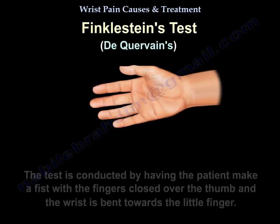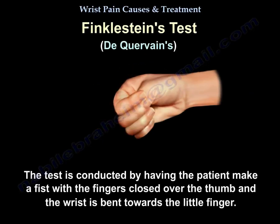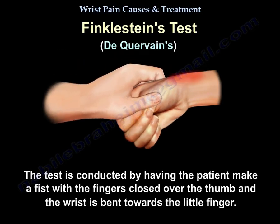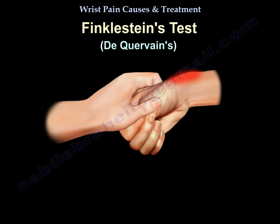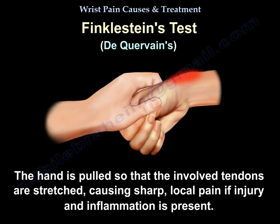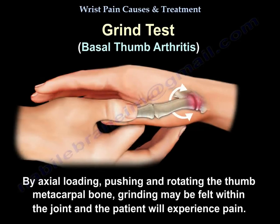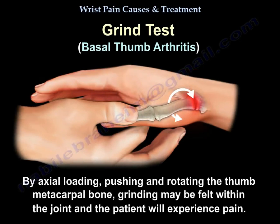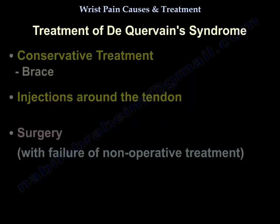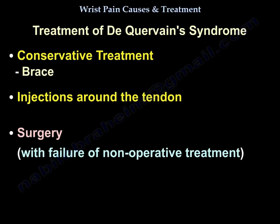The Finkelstein test is conducted by having the patient make a fist with the fingers closed over the thumb, then bending the wrist toward the little finger. The hand is pulled so the involved tendons are stretched, causing sharp local pain if injury and inflammation is present. The grind test for basilar thumb arthritis is performed by axial loading, pushing, and rotating the thumb metacarpal bone — grinding may be felt and the patient will experience pain. Treatment of De Quervain syndrome includes conservative treatment, bracing, injections around the tendon, and surgery when non-operative treatment fails.